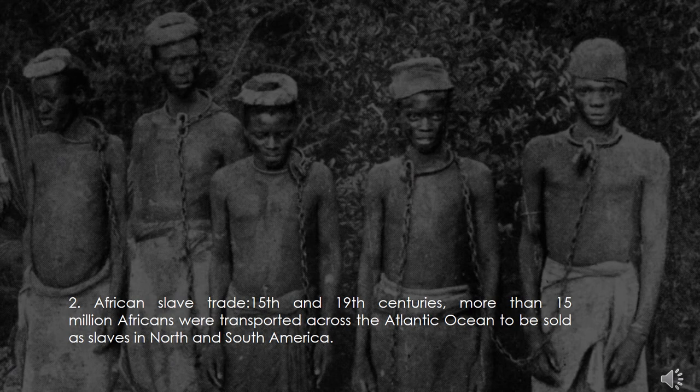The third massive human migration in Africa was the African slave trade. Between the 15th and 19th centuries, more than 15 million Africans were transported across the Atlantic Ocean to be sold as slaves in North and South America. Millions of slaves were also transported within the continent, usually from Central Africa and Madagascar to North Africa and the European colony of South Africa. Most slaves were taken from the isolated interior and sold on the West African coast. Thousands died in the brutal process of capture, and thousands more died on the forced migration to trading centers, with even more lost on the treacherous voyage across the Atlantic Ocean.